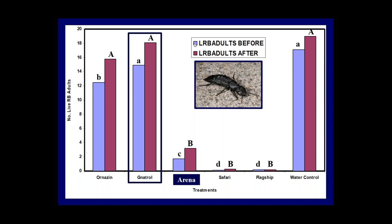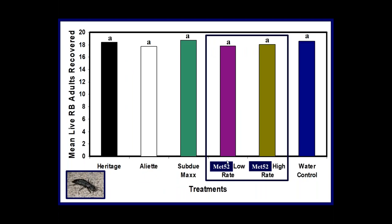In this first dataset, the blue bar represents releasing adults before the application and the dark red bar represents after the application. Natrol — Bacillus thuringiensis israelensis, a bacteria for fungus gnat larvae — had no direct impacts on rove beetle adults compared to the water control. However, all three neonicotinoids — Arena, Safari, and Flagship — were extremely harmful directly to rove beetle adults.